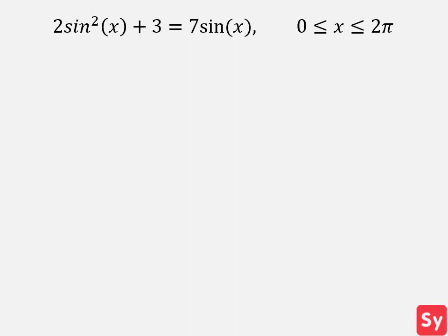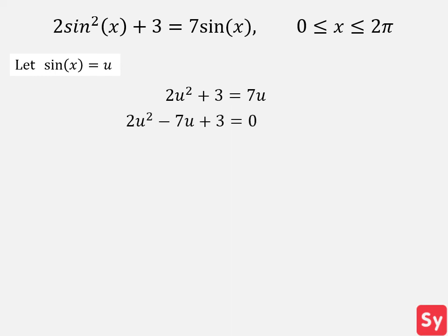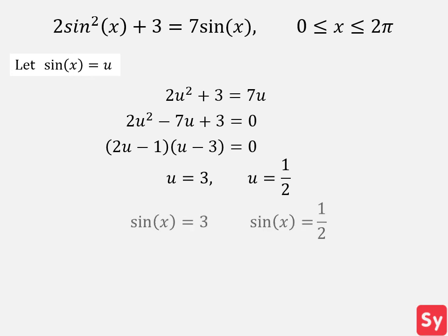Last example: we have 2 sine of x squared plus 3 equals 7 sine of x, where 0 is less than or equal to x, which is less than or equal to 2 pi. We use u substitution, letting u equal sine of x, then rewrite in standard quadratic form and factor. Solving gives u equals 3 and u equals 1 half. Substituting sine of x back for u: sine of x equals 3 has no solution since sine never equals 3. For sine of x equals 1 half, referring to the unit circle, we get x equals pi over 6 and 5 pi over 6, which is our answer.